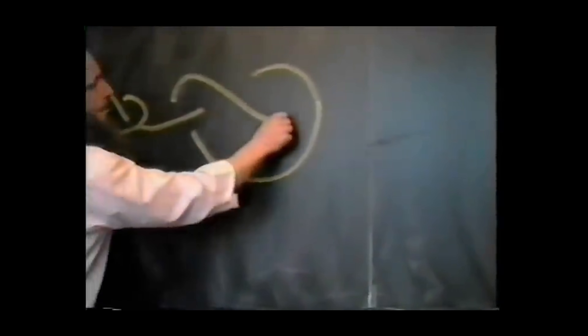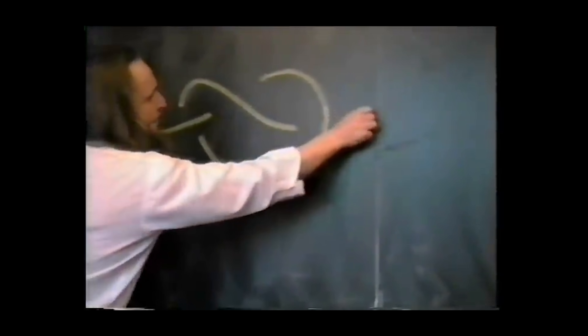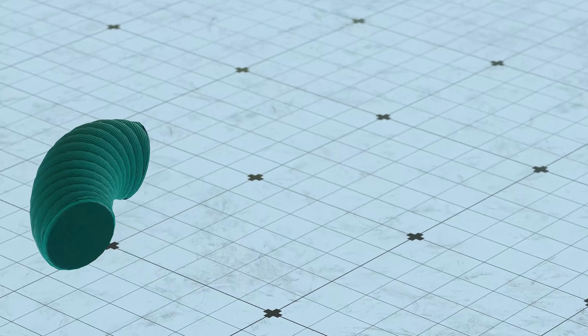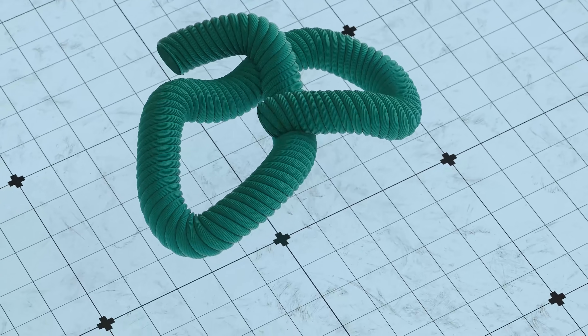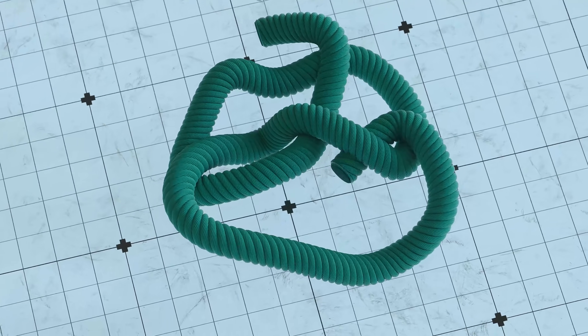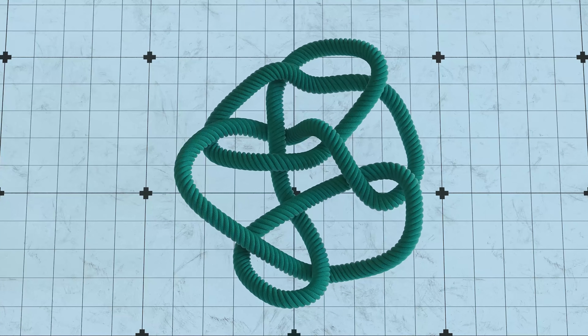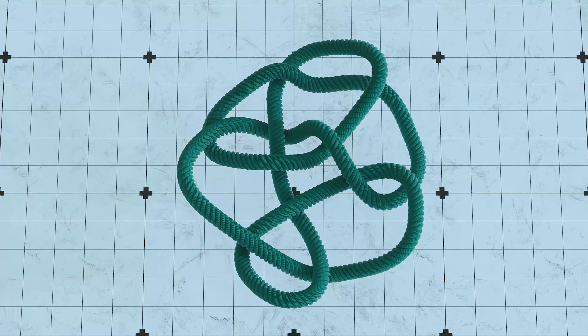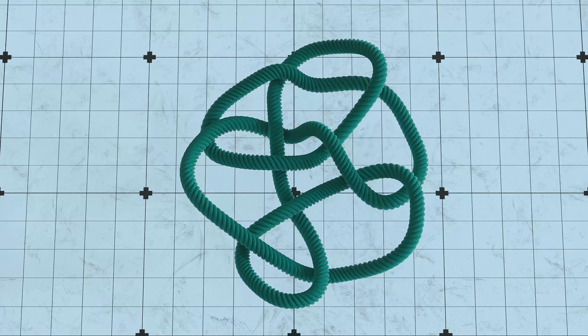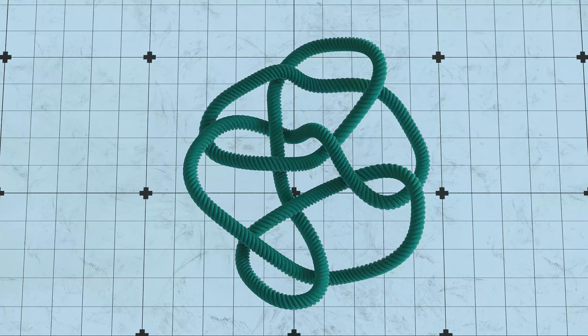This is John Horton Conway. His infamous knot problem eluded mathematicians for half a century. The question asked whether the Conway knot was actually a slice of a higher dimensional knot, a property called sliceness. This question proved answerable for thousands of similar knots, but Conway's resisted every attempt to untangle it.